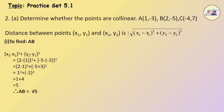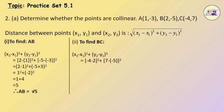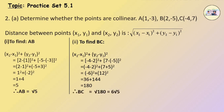To find BC: (x2 minus x1) squared plus (y2 minus y1) squared equals (minus 4 minus 2) squared plus (7 minus minus 5) squared, which equals minus 6 squared plus 12 squared, equal to 36 plus 144, which gives 180. Therefore, BC equals the square root of 180, which is 6 root 5.